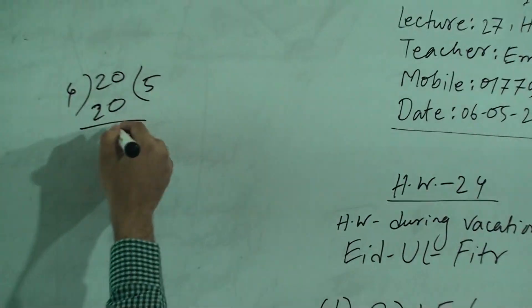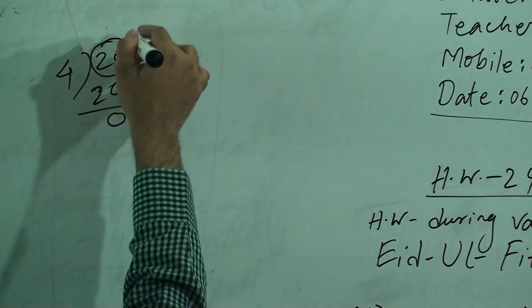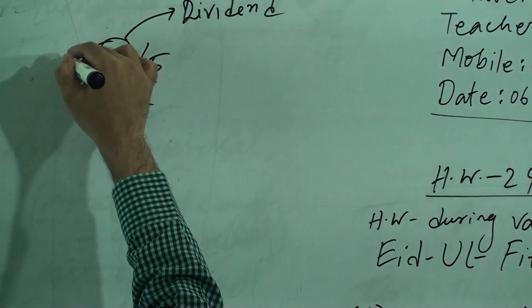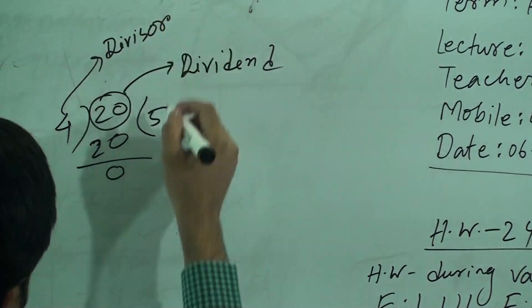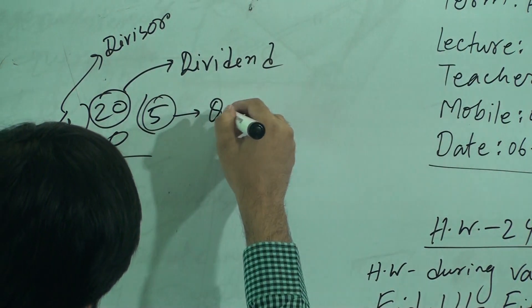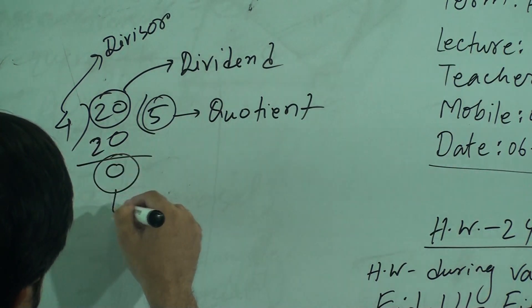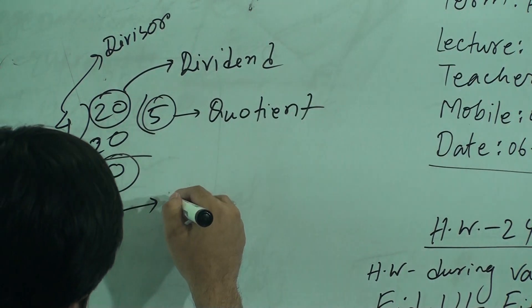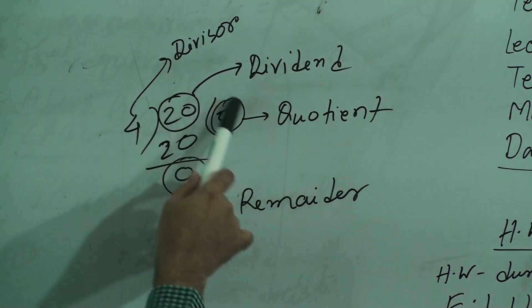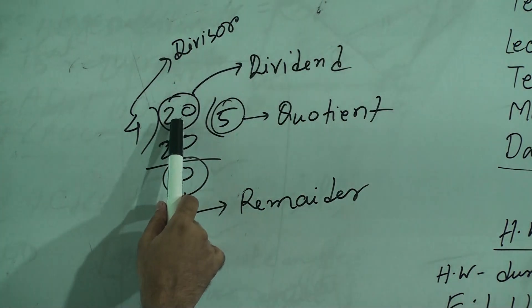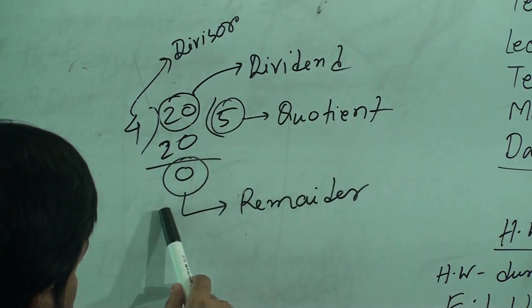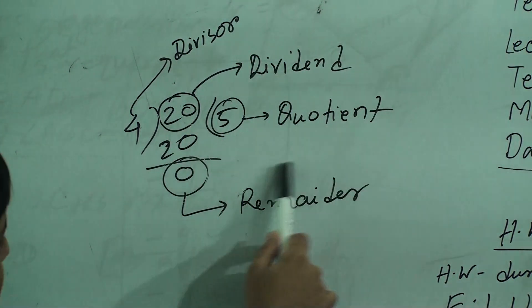So, we have 20 and the remainder will be 0. The number which is divided is known as the dividend. The number by which division is done is known as the divisor. The number obtained after division is known as the quotient. And the remaining number at the end of the division is known as the remainder.